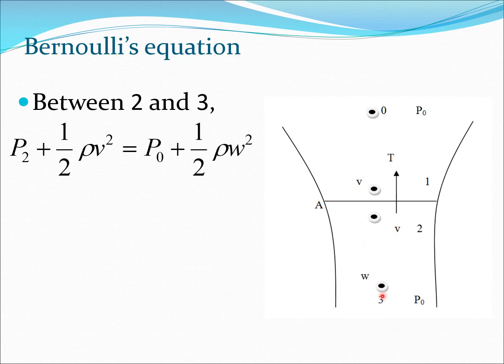Between 2 and 3, we have p2 + 1/2 ρv² = p0 + 1/2 ρw². Far downstream the velocity is w, that's what we get here, and also the pressure is back to p0. Here the pressure is p2, the velocity is v.